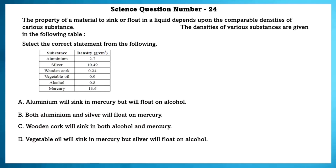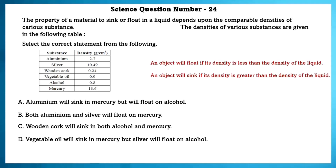Science question number 24. The property of a material to sink or float in water depends on the comparative densities of various substances. An object will float if its density is less than the density of the liquid, and sink if its density is greater. Using the given table, we can say that both aluminium and silver will float on mercury.